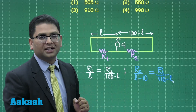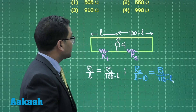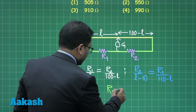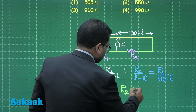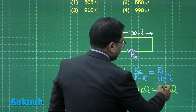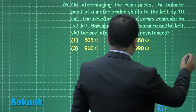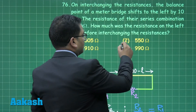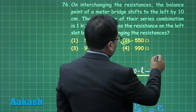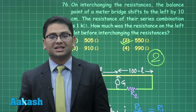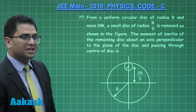We now have three variables — R1, R2, and l — but three equations. The third equation is R1 plus R2 equals 1000 ohm. Solving these three simultaneous equations, the value of R1, the left resistance, comes out to be 550 ohm. The correct option for question 76 is option 2.